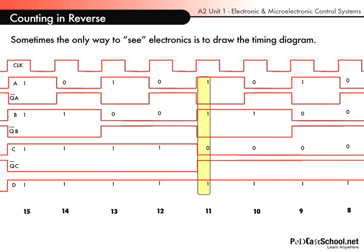And so forth and so on. So in this case we're counting down from 15 through to 8, and if I continued this timing diagram on, you would see that it would go the whole way to 0. So we have created a down counter. Very easy.